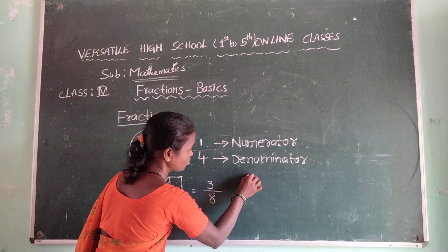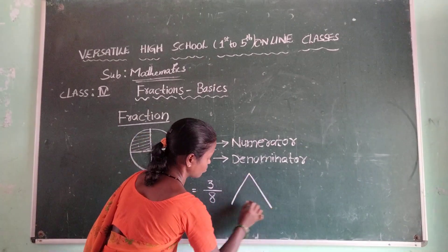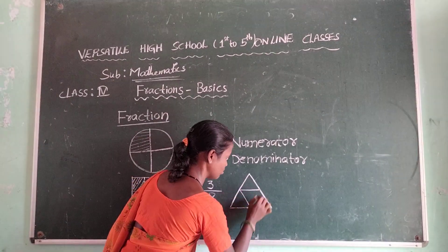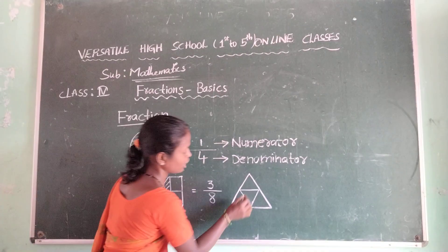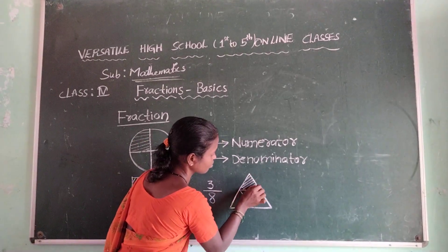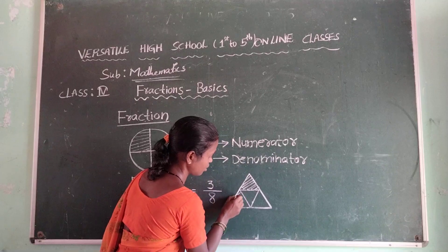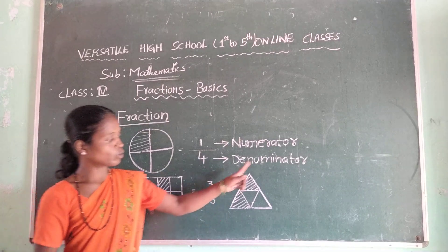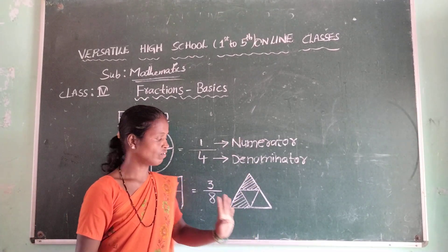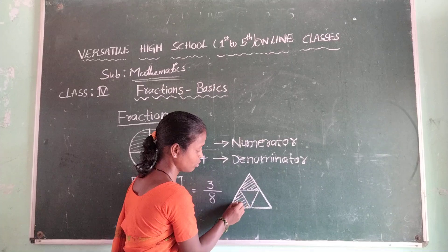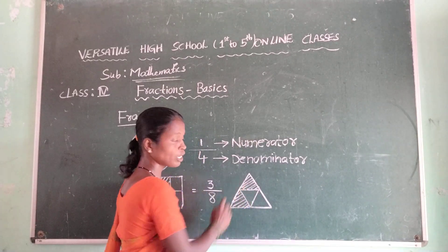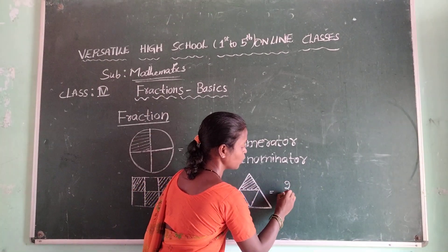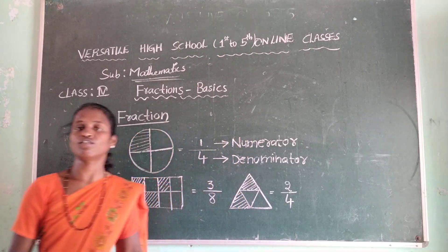We are going to another picture for you. Here I am shading this one and this one. Children, observe this figure. Total parts are how many? Four — one, two, three, four. And how many parts are shaded? One, two — two. So here, two by four is called a fraction.